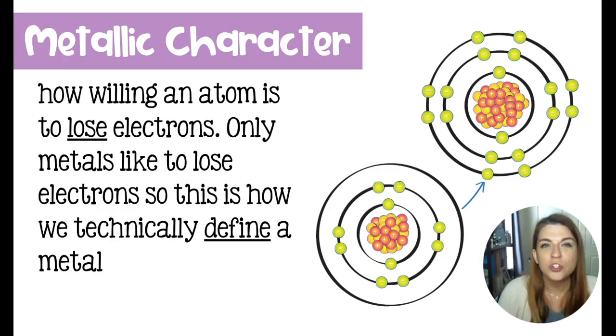Next up, we have metallic character, which is also very related to electronegativity and ionization energy because it's related to electrons. Metallic character is defined as the willingness of an atom to lose electrons. So if it's a metal, it wants to lose. If it is a nonmetal, it wants to gain. And that's how we really define these things.